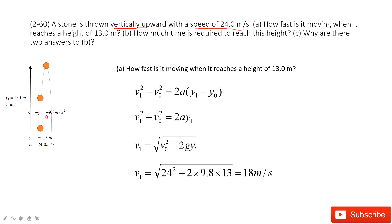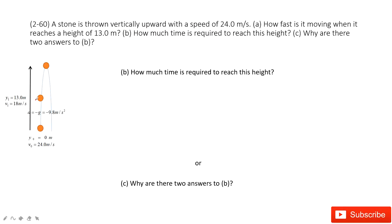The second one asks you how much time is required to reach this height. We want to find the time t. When we want to find the time t, we know initial position, final position, initial velocity, final velocity, and acceleration.